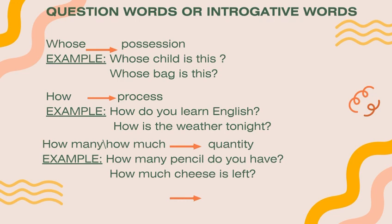For example: 'Whose child is this?' or 'Whose bag is this?' Number eight: 'how' — when you ask about any process. For example: 'How do you learn English?' or 'How is the weather tonight?' Number nine: 'how many' or 'how much' — when you ask about any quantity. For example: 'How many pencils do you have?' or 'How much cheese is left?' I hope you enjoyed it!